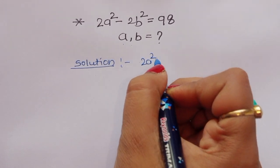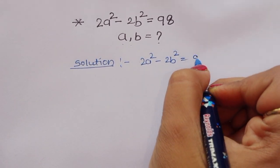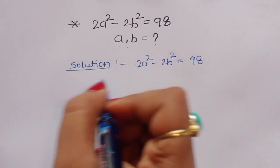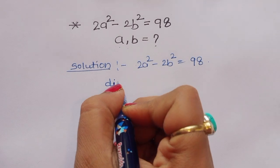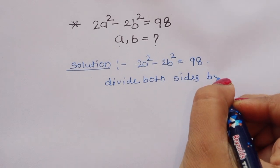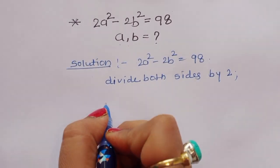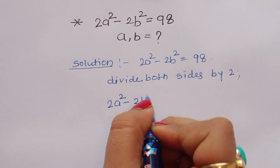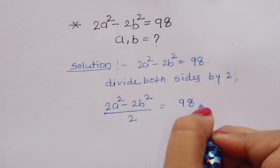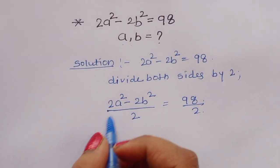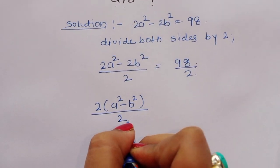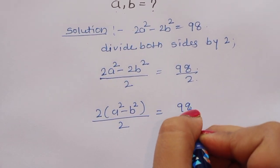First, what is given? That is 2a² minus 2b² is equal to 98. Now we can do one thing here — divide both sides by 2. Then we will get: 2a² minus 2b², divided by 2, is equal to 98 divided by 2. We can take 2 as common, giving (2a² minus b²) divided by 2 equals 98 divided by 2.